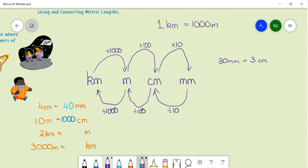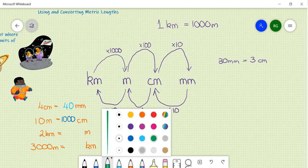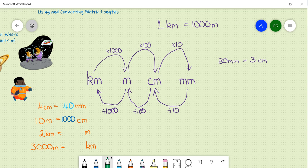If I was to go from two kilometres into metres, I need to multiply by one thousand, which will equal two thousand metres.